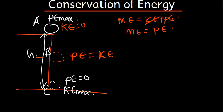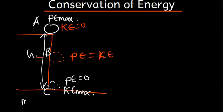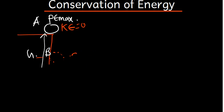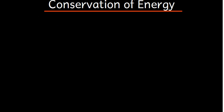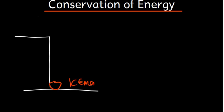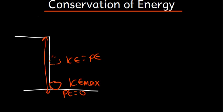You can only transform energy from potential to kinetic or from kinetic to potential. Now if the object is going up, at the bottom it has kinetic energy at maximum and potential energy is zero. At the midpoint, half the kinetic energy converts to potential energy. At the top, all kinetic energy is zero and has been converted to potential energy at its maximum.